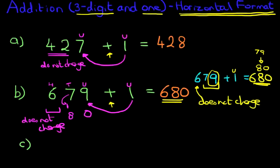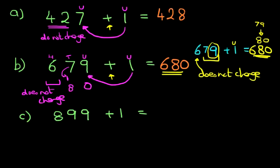This time we have 899 plus 1. In fact, we need to scroll down a bit further. We've got lots of room now. 899. So how would we do this?